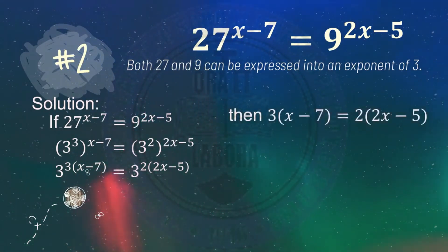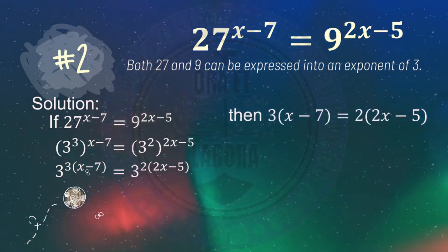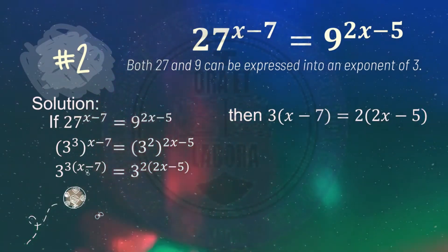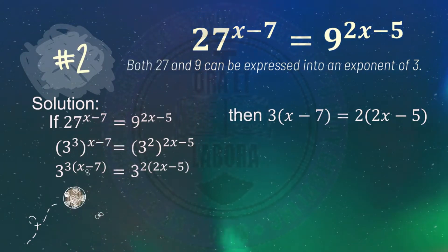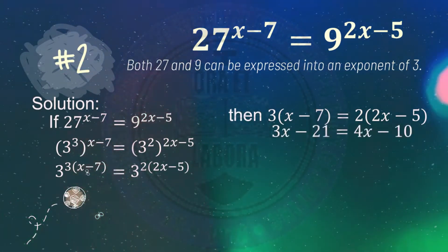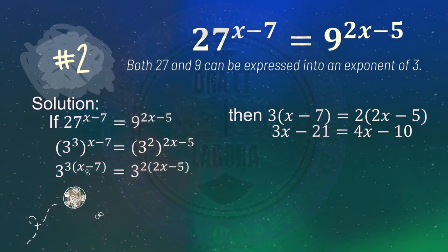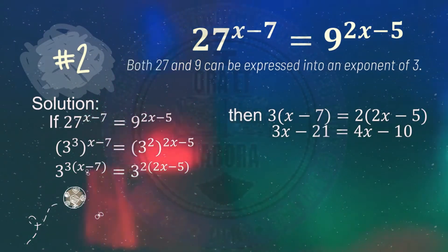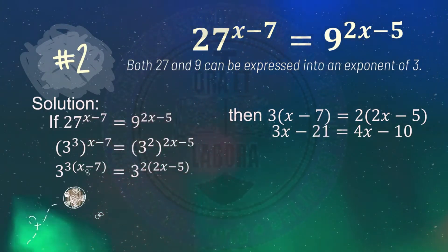Then 3 times quantity x minus 7 equals 2 times quantity 2x minus 5. By the distributive property, distributing 3 to x minus 7 gives 3x minus 21. Distributing 2 to 2x minus 5 gives 4x minus 10.